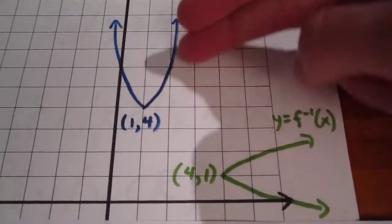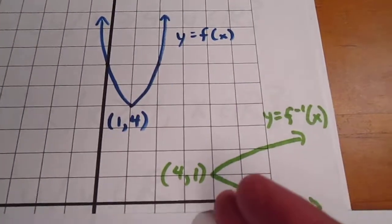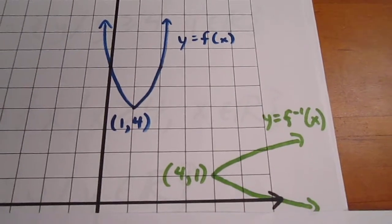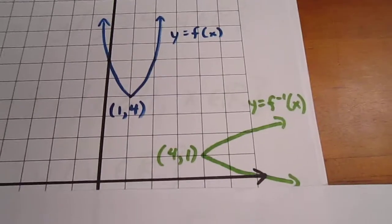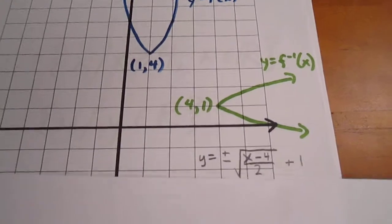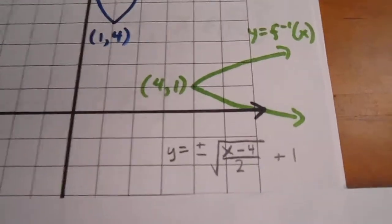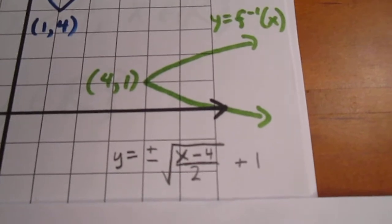Instead of opening to ever-increasing values of y, which is up, we open to ever-increasing values of x, which is to the right. And so we might be glad on first glance that we had that image to work from, but then we realized that using our work in transformations, we could have done this. We could have graphed this green curve as well.